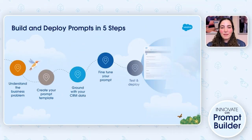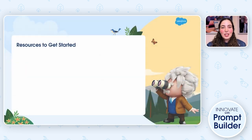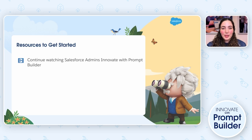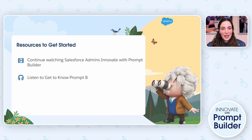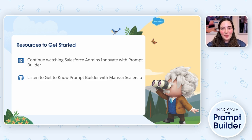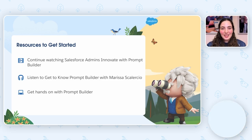We just walked through the five steps you can follow to build and deploy prompts. To continue learning, check out these resources. Watch our next video to see Prompt Builder in action — you'll see how to use a field generation template to summarize customer feedback. Don't forget to check out the podcast episode to see how an awesome admin enabled Prompt Builder in her org. And finally, get hands-on with Prompt Builder and show us what you built with Einstein. Thanks so much for watching, and we'll see you next time in the cloud.